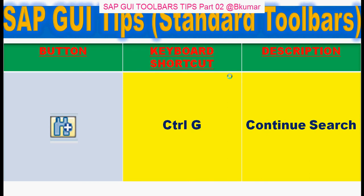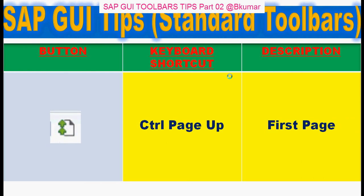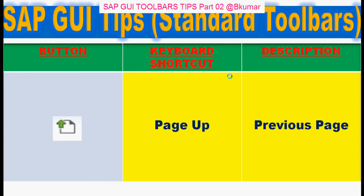And to continue search, use Ctrl+G. For the first page, use Ctrl+P on your keyboard. And for the previous page, you can use Page Up on your keyboard.